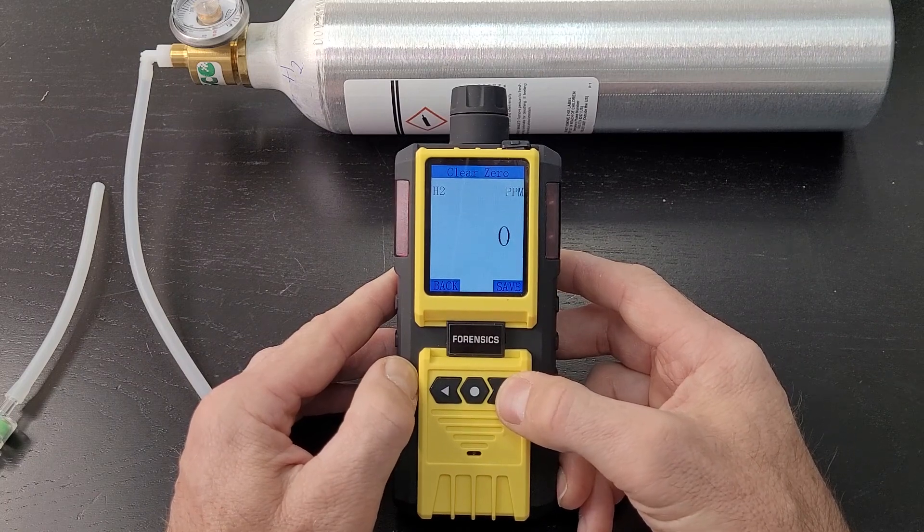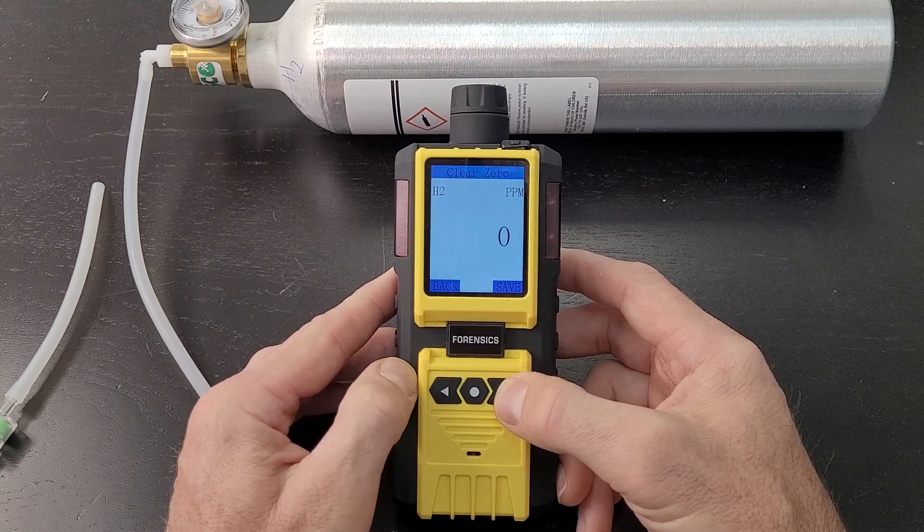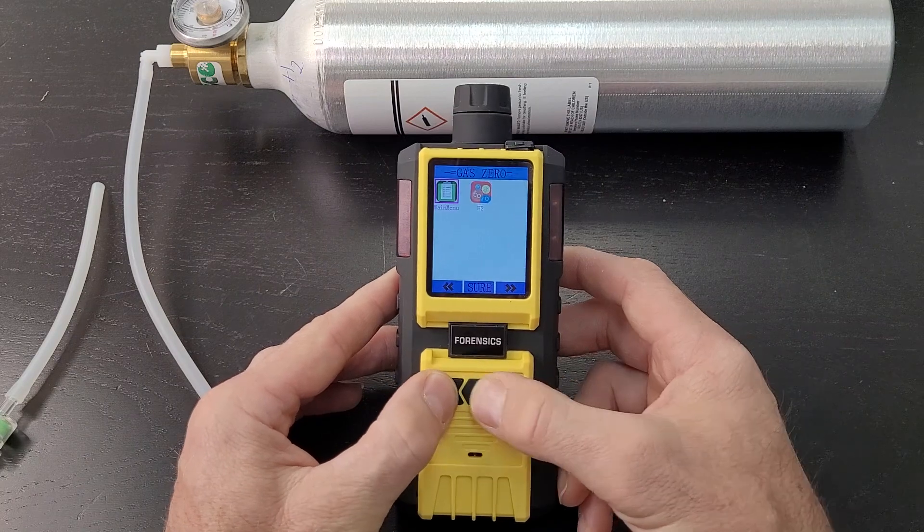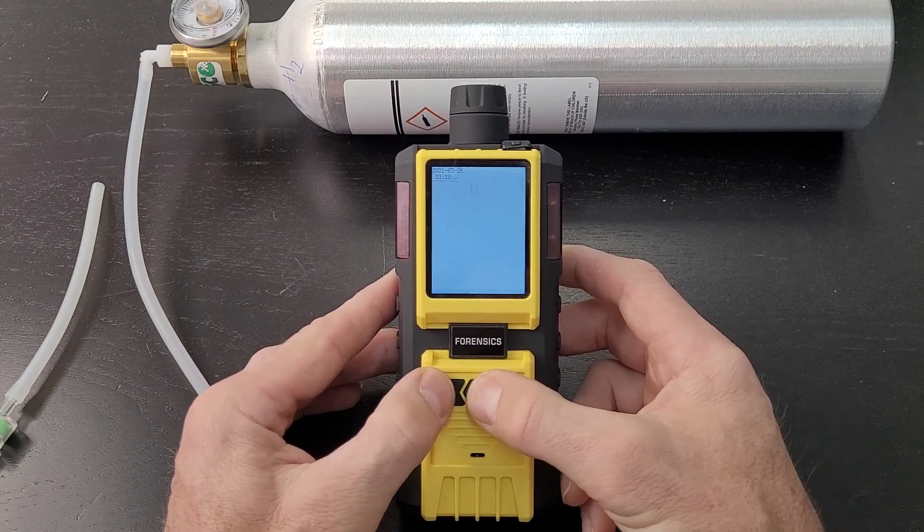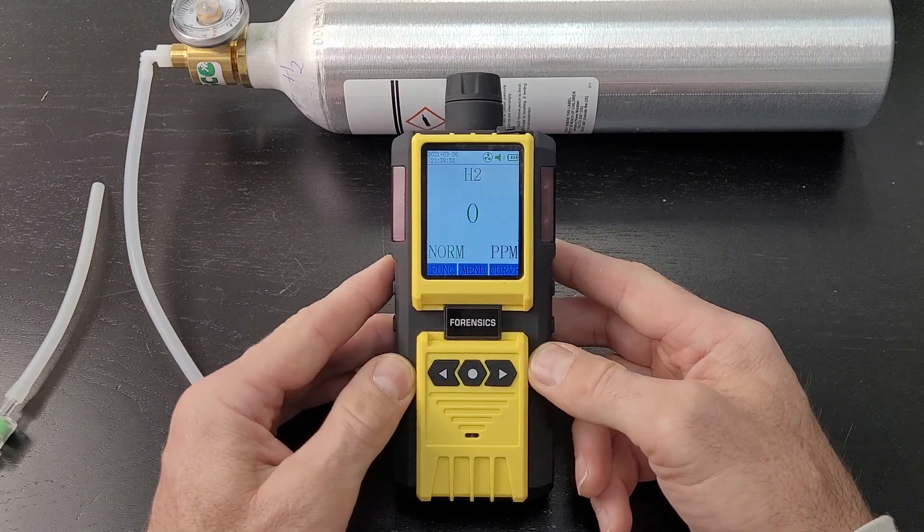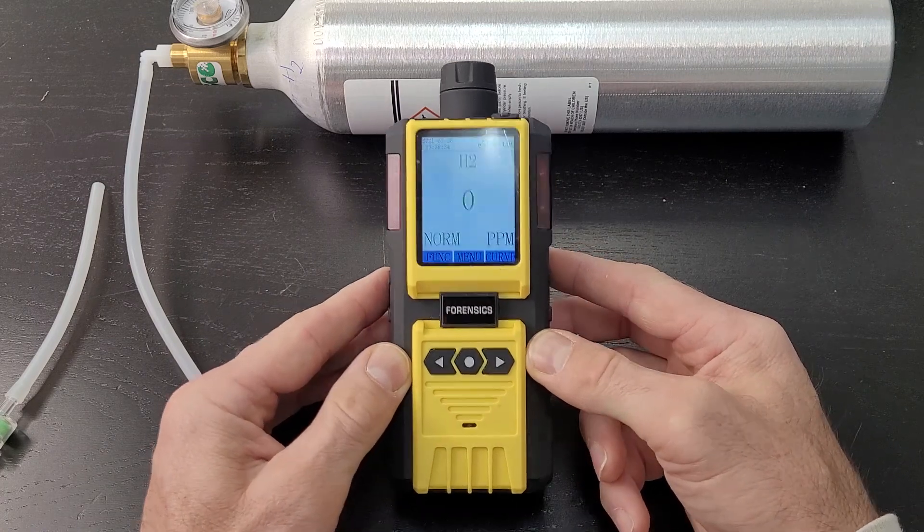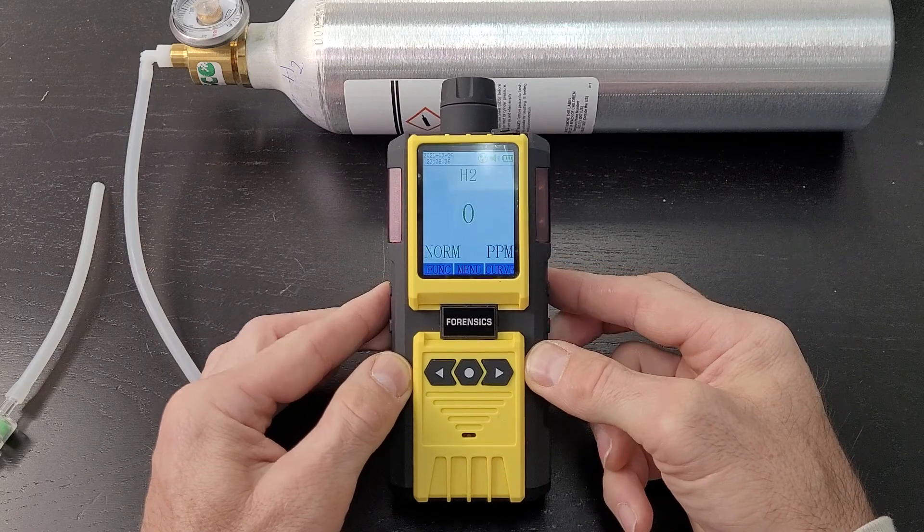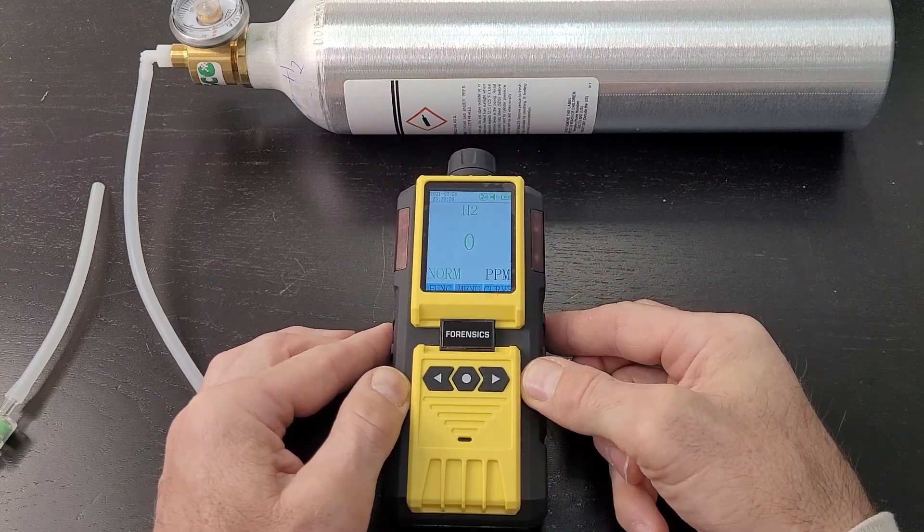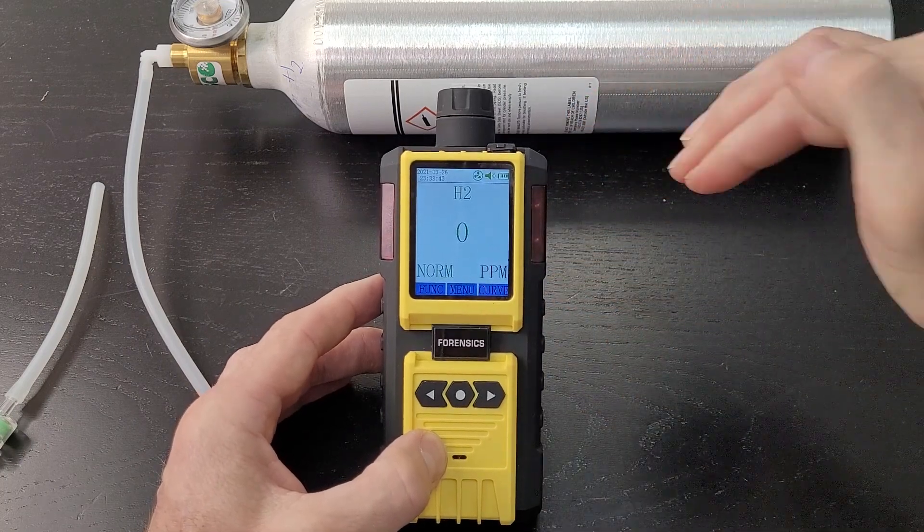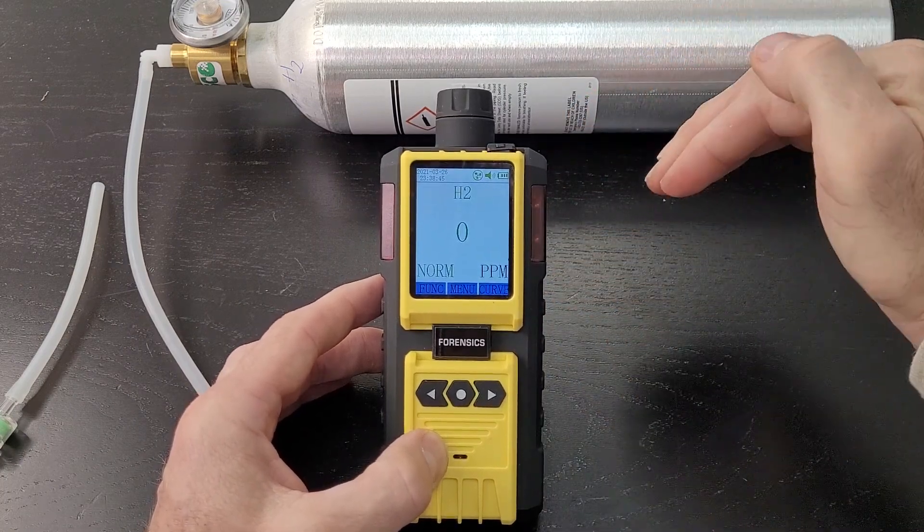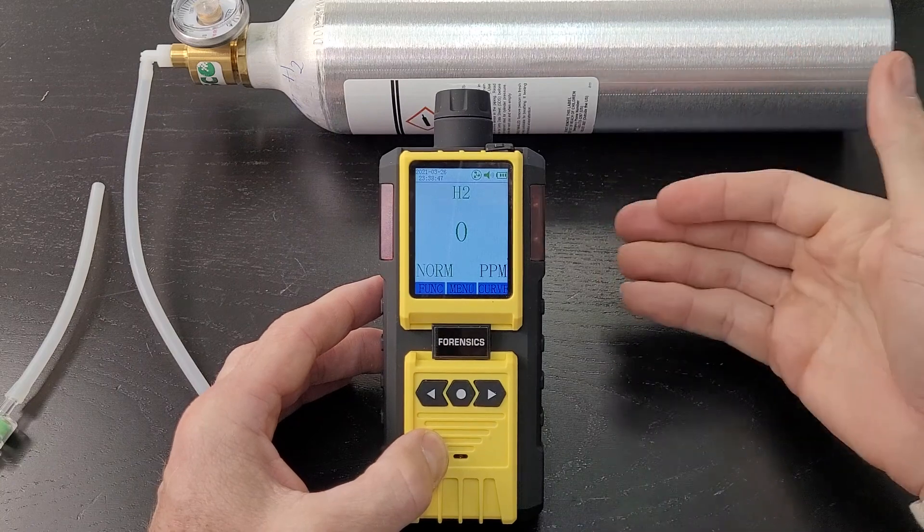Once you're done, go back to the main menu. Congratulations, the first step has been completed. Zero cal on these guys is very easy. Next we need to do a span calibration. We need to let the detector know 100 ppm is 100 ppm, and you need to do that periodically.